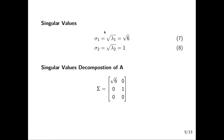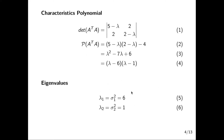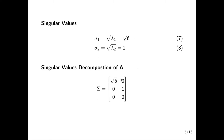From there, to find the singular values we take the square root of the lambdas. To find our Sigma matrix, we place the singular values on the diagonals. We have two singular values giving us a two by two diagonal block, but we need to match the shape of the original matrix, so we pad an extra row of zeros to make it three by two.